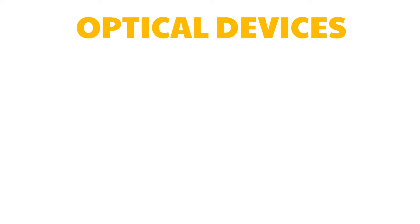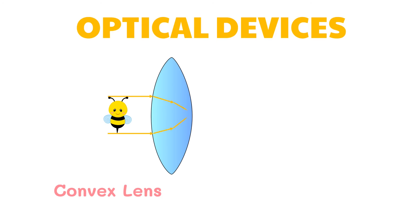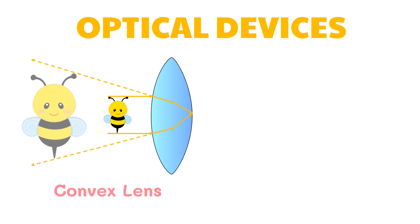Before we continue, keep in mind that convex lenses make objects appear bigger. On the other hand, concave lenses always produce smaller images.